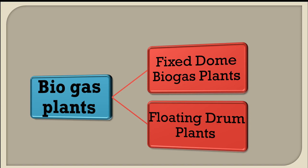Welcome back, dear students. Having covered the working of a biomass digester, the benefits of biogas plants, and their products in the last lecture, we will continue our discussion on the types of biogas plants. There are two types: fixed dome biogas plant and floating drum biogas plant. We will see the construction features, advantages, and disadvantages for these two types in today's lecture.